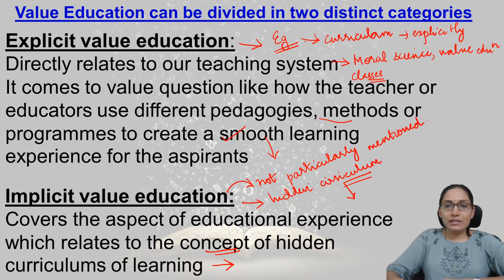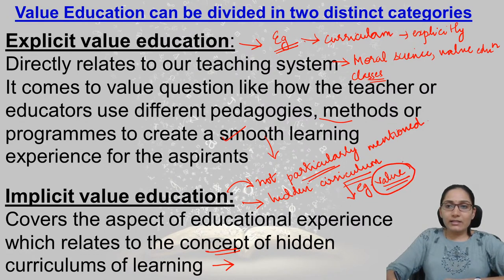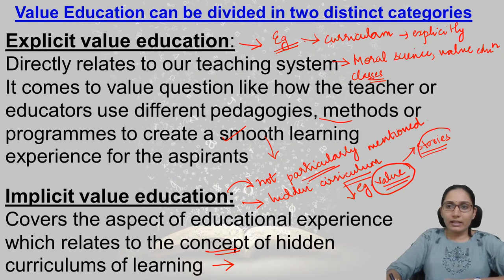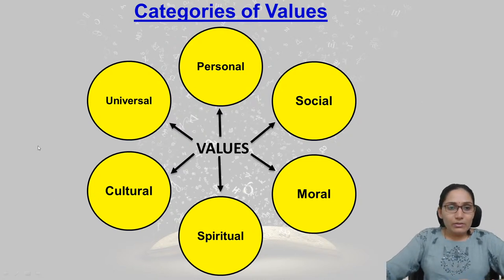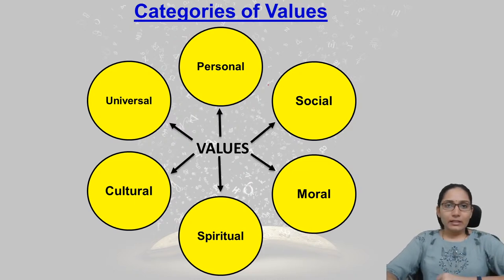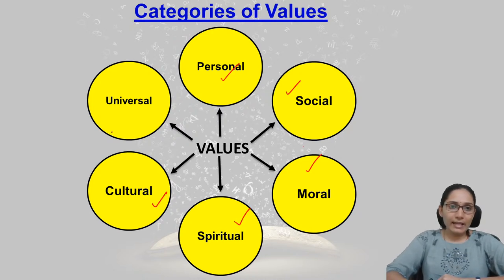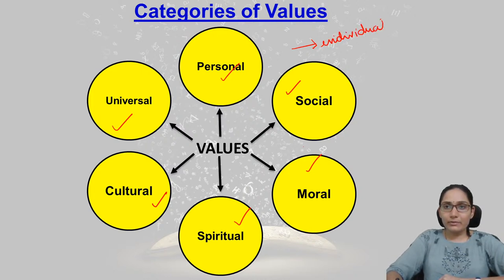Implicit value education is called hidden curriculum because it is not particularly mentioned. For example, if a teacher is teaching a subject and in the meanwhile tells students some examples, stories, or value-related anecdotes in class, this is implicit value education. Finally, we also discussed the categories of values: personal values, social values, moral values, spiritual values, cultural, and universal values.